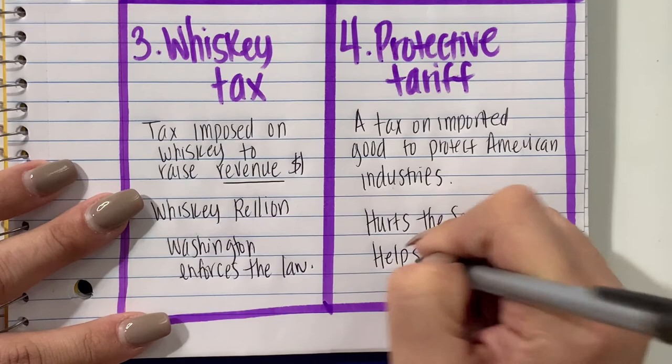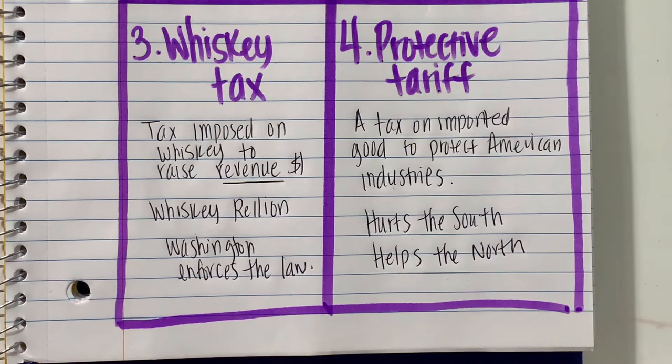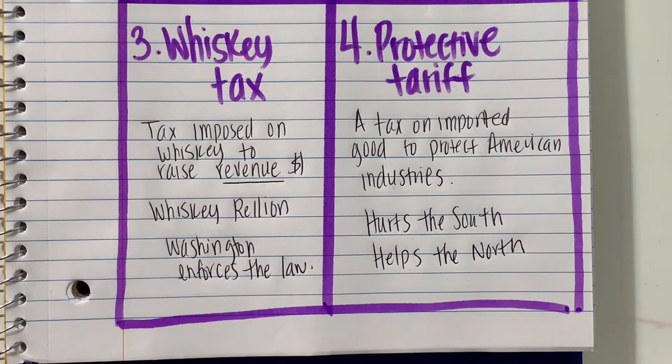These are the four parts of Hamilton's financial plan, boys and girls. Make sure that you're able to complete these notes and that you have them in the appropriate spot. Thank you so much for watching, and we'll see you next time.